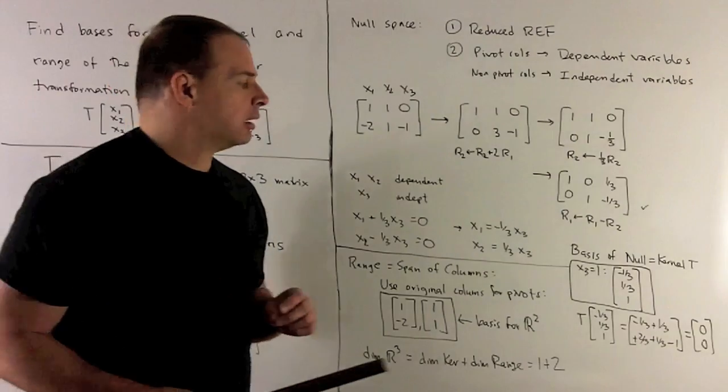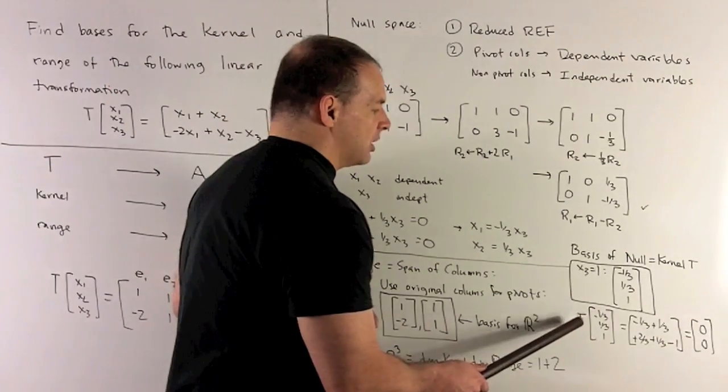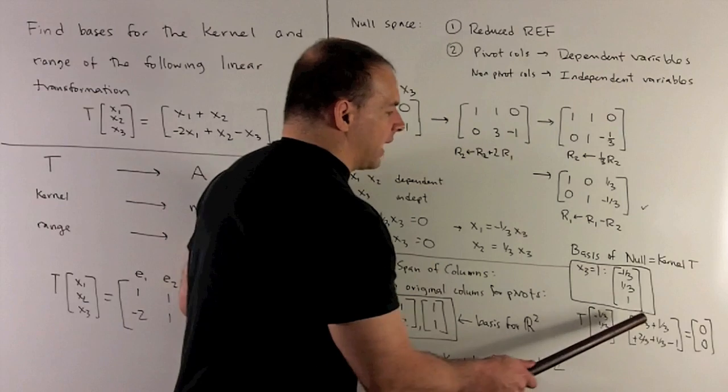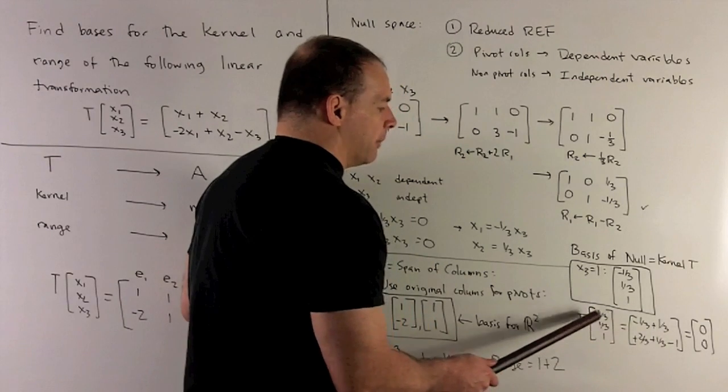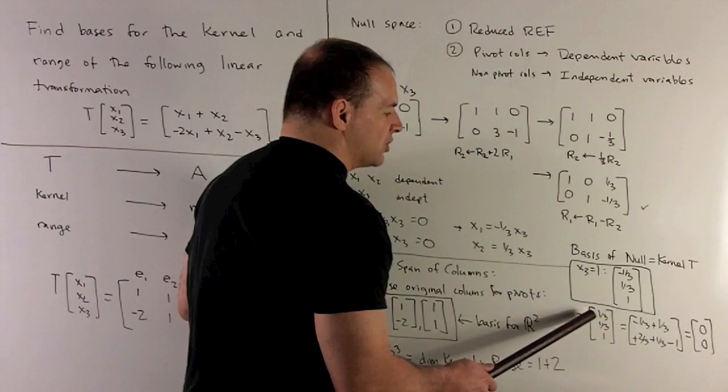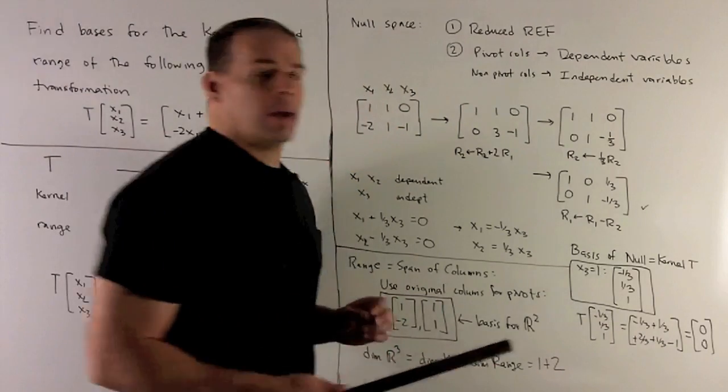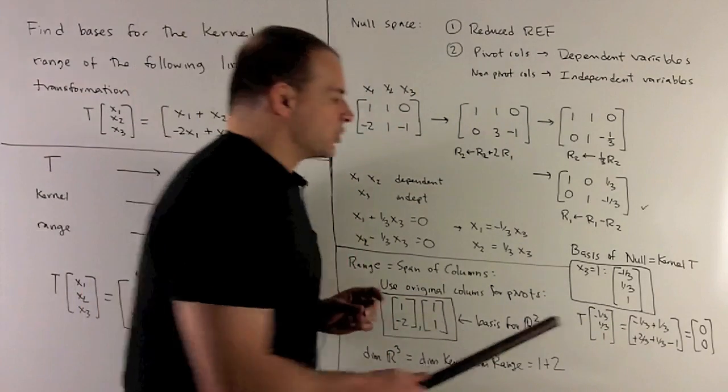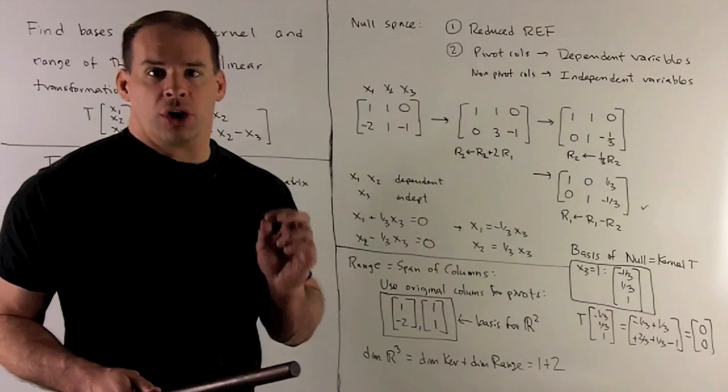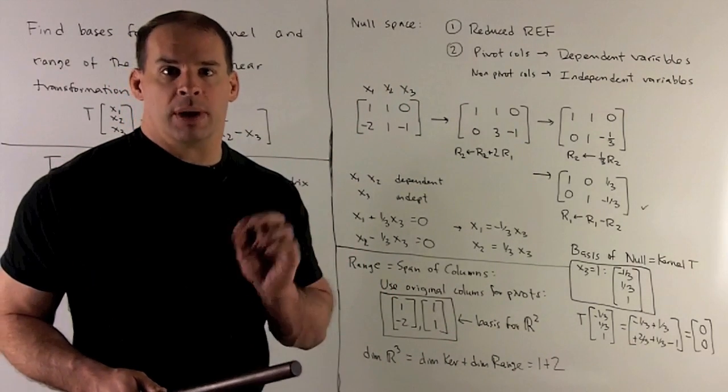So let's check. If I apply T to minus 1/3, 1/3, 1, what comes out? Well, we have x₁ plus x₂. So it's going to be minus 1/3 plus 1/3 gives me a 0. And then I'm going to have minus 2x₁ plus x₂ minus x₃. That's also going to give me a 0. So our basis vector is definitely in the kernel of T. It produces a 0 when we apply T.